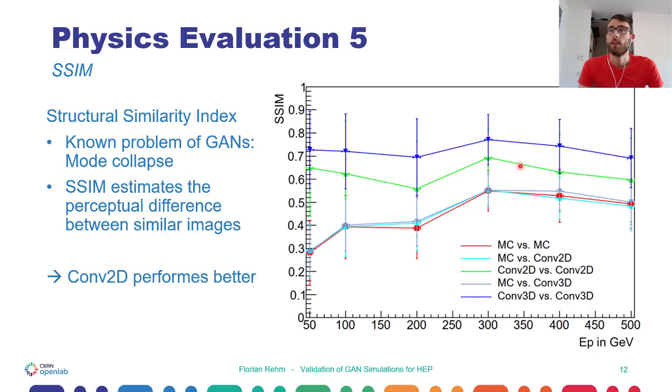It is also interesting to note that by measuring the similarity between GAN and Monte Carlo images, in light blue and gray here, we can see that both GAN models produce images that resemble Monte Carlo within the same level of similarity as the Monte Carlo dataset itself in red.